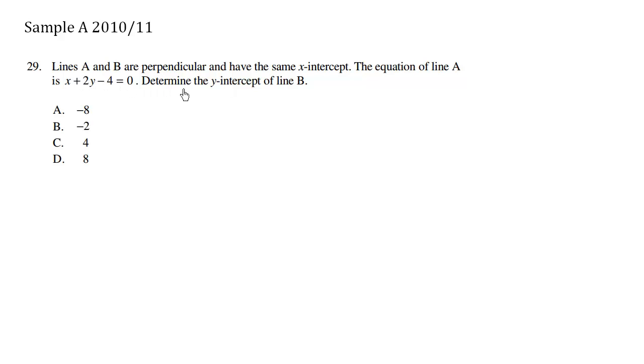Lines A and B are perpendicular and have the same x-intercept. The equation of line A is x + 2y - 4 = 0. Determine the y-intercept of line B.